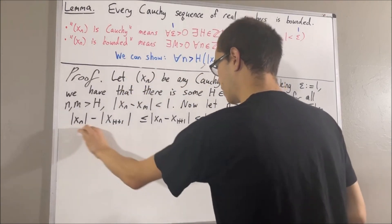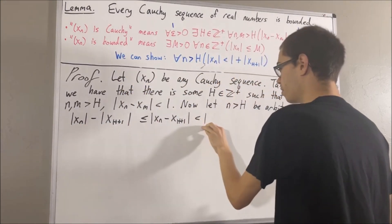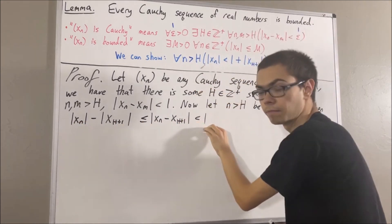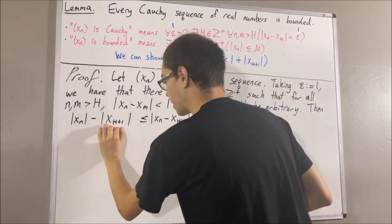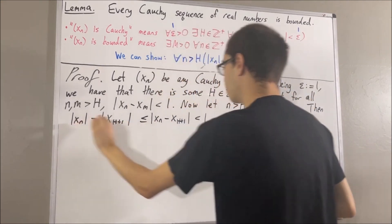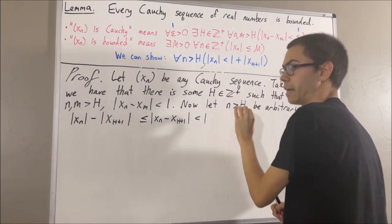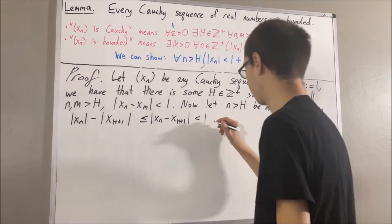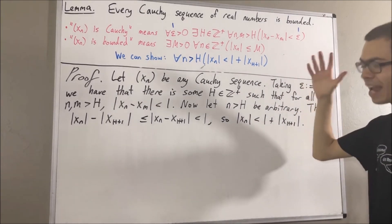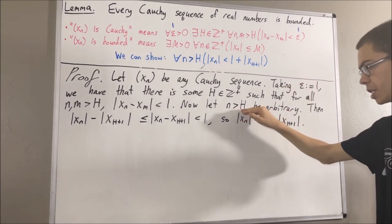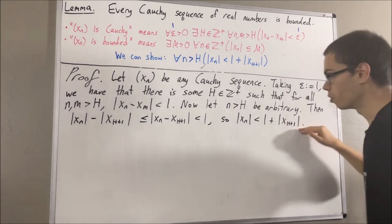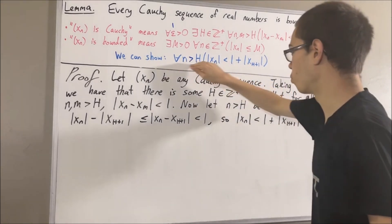So we see that the absolute value of xn minus the absolute value of x_{h+1} is less than 1. Adding the absolute value of x_{h+1} to both sides, we get that the absolute value of xn is less than 1 plus the absolute value of x_{h+1}. So given any positive integer n greater than h, this follows, and we have proven the claim.